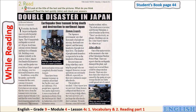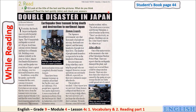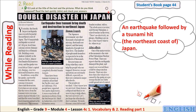After reading the text, we are going to answer this question to get the main idea: What do you think happened? Pause the video then answer. The main idea is: an earthquake followed by a tsunami hit the northeast coast of Japan. Good job, my students!